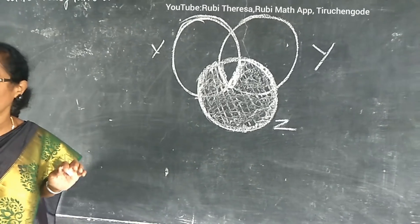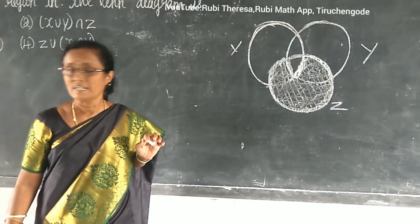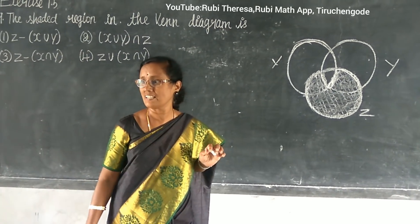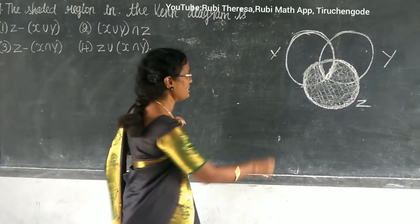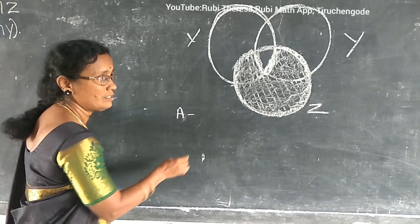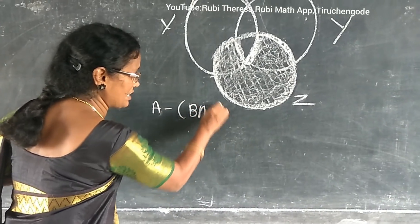Already we have studied about what law? P-M-I-R for set difference, isn't it? What is it? A difference B intersection C.